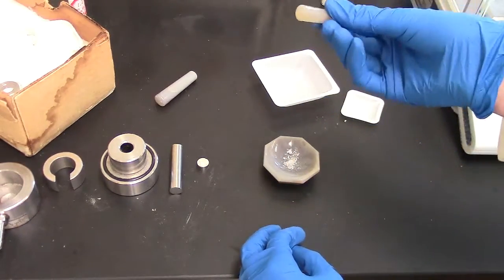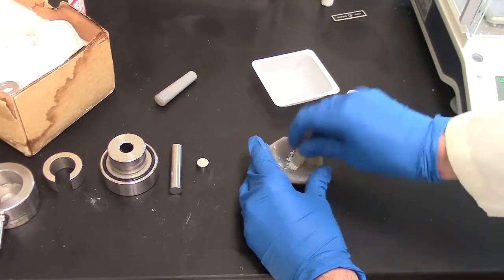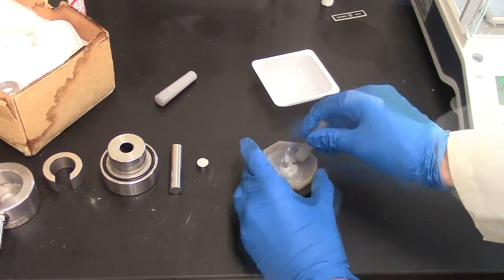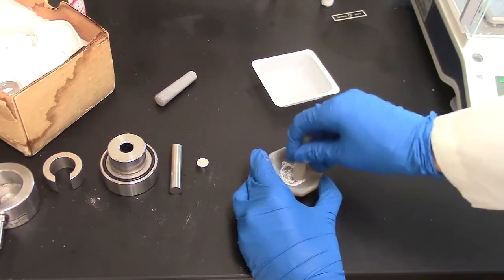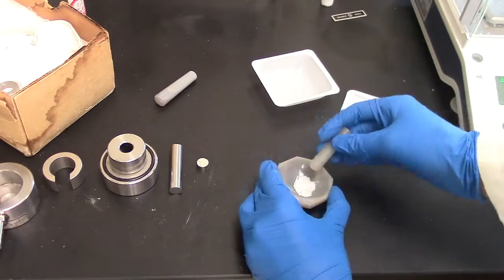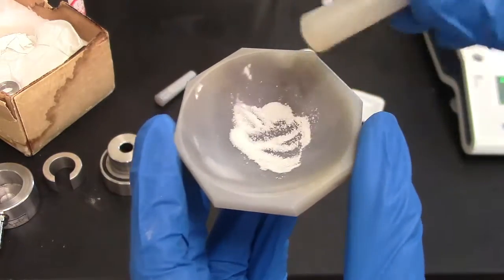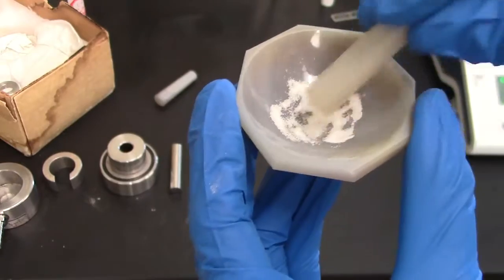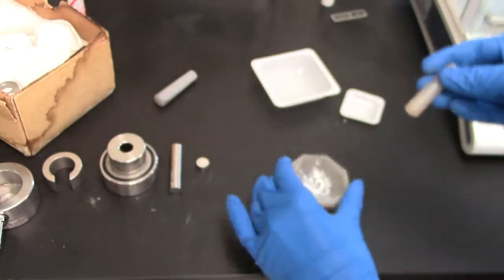Now we take this little pestle and crush our KBR and our substance together in the mortar. We're going to grind it into a nice fine powder, or as fine as we're able to. So it started out as large crystals, but you can see that it's fairly fine now. Think of it closer to powdered sugar than salt crystals.